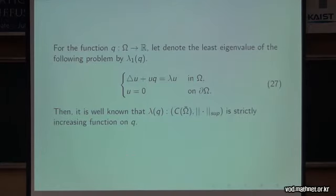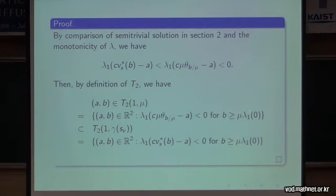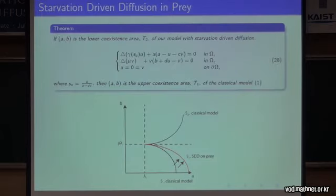The proof is based on the fact that the least eigenvalue is a strictly increasing function in Q, and also uses the comparison principle from the previous chapter. By the comparison principle and comparison of semi-trivial solutions, we can say that if (A, B) is in T2 with diffusivity 1 and mu — the region for the classical model — it is contained in T2 with diffusivity gamma(S/V) in T3. On the other hand, if we take a starvation-driven diffusion strategy applied to the prey, then this area also rotates counterclockwise, and interestingly, the prey-only area becomes larger.